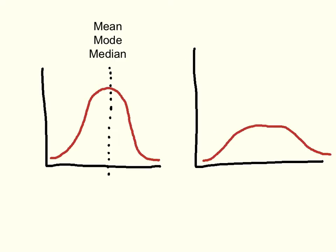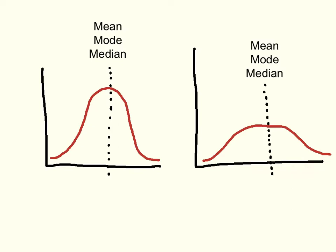For example, here's another normal distribution, and this distribution may have exactly the same mean, mode, and median as this one, but it looks very different in shape. What's different is that the observations are dispersed across a wider range of values.